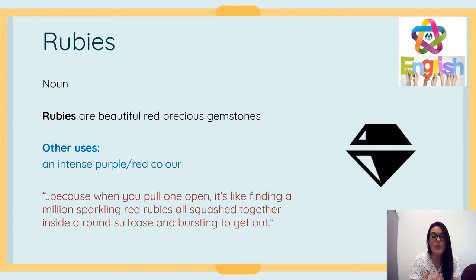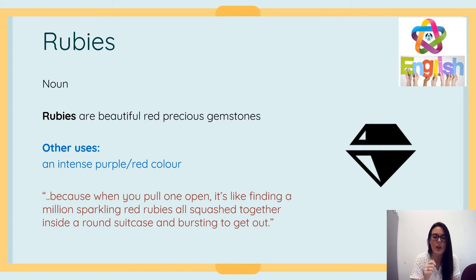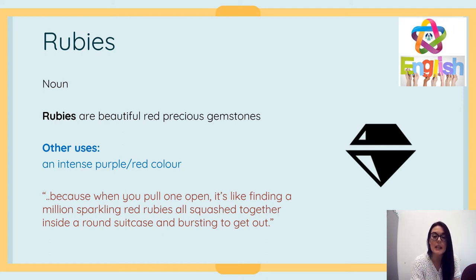The next word is 'rubies.' Most of you might already know this word — rubies are a beautiful red precious gemstone. It's also an intense purpley or red colour. In 'Wizard of Oz,' Dorothy has ruby red slippers. The example from the text: 'because when you pull one open it's like finding a million sparkling red rubies all squashed together inside a round suitcase and bursting to get out' — that's obviously describing the inside of a pomegranate.